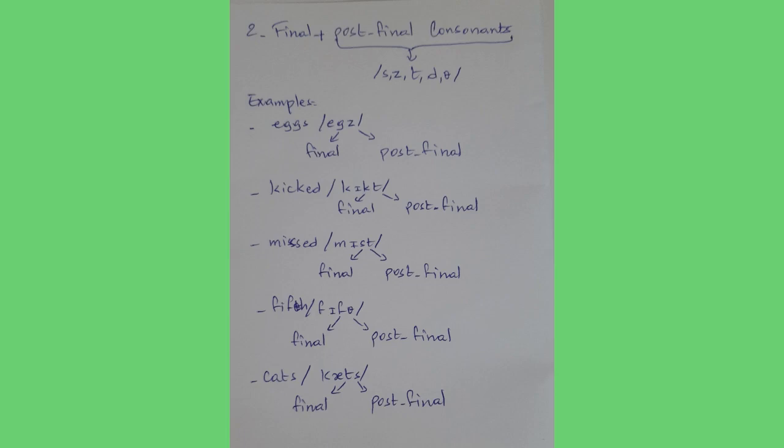The same applies to 'missed': /s/ is final and /t/ is post-final. In 'fifth': /f/ is final and /θ/ is post-final. In 'cats': /t/ is final and /s/ is post-final.